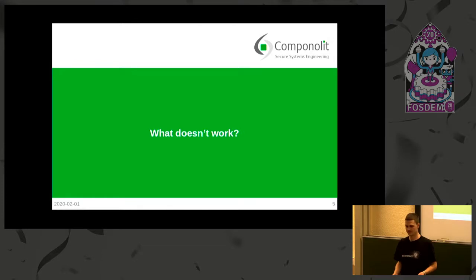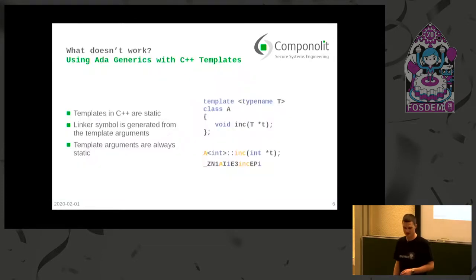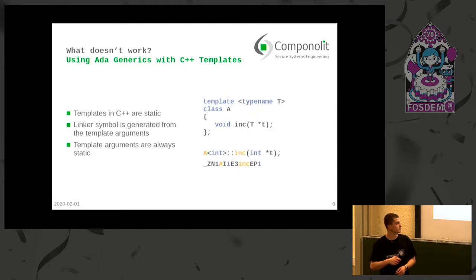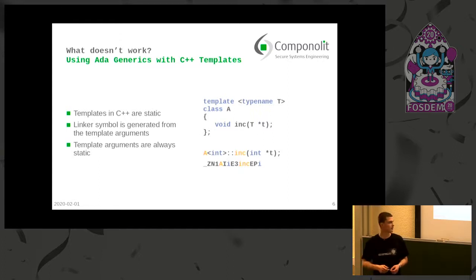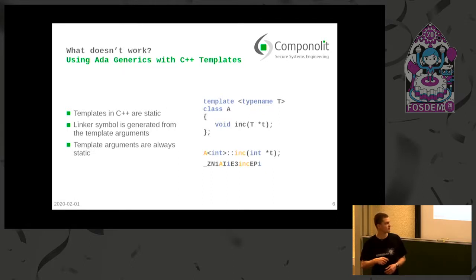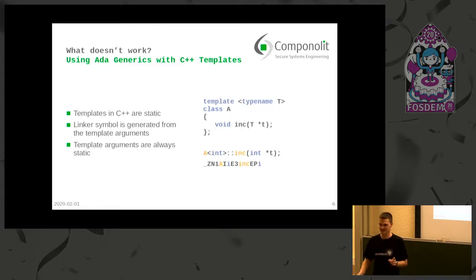So what doesn't work, or what is really hard to get right? Templates in C++ are static. When you have a template instantiated with a type name T, it generates its own symbol, and this symbol is mangled to prevent overlapping symbols. So if we instantiate this template with integers, the name A maps to A in the symbol, the integer maps to E, the function name maps to its part, and the other integer maps to I. The things between are start and end points for the names — this is a C++ mangled symbol.